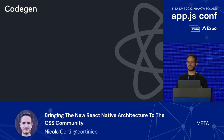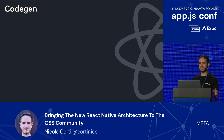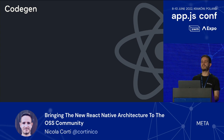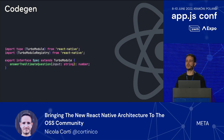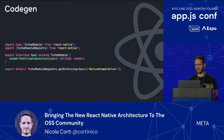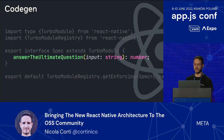I want to spend a couple of seconds on the Codegen, because a lot of people ask me: do I need to use the Codegen, and what is the value of it? What we do internally at Meta, and what we suggest people to do, is use the Codegen to define spec files. You will have your specification of your API in a TypeScript file. You will declare what your TurboModule will do — here you're seeing a function called 'answer the ultimate question' which takes a string input and returns a number, and you register that. The focus of the Codegen is all about that function, its input types and output types.